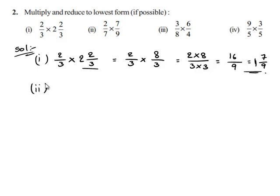Take down the second bit, that is 2 upon 7 multiplied by 7 upon 9. This is equal to 2 multiplied by 7 upon 7 multiplied by 9. This is equal to 7 in the numerator gets cancelled with 7 in the denominator and we will get 2 upon 9.